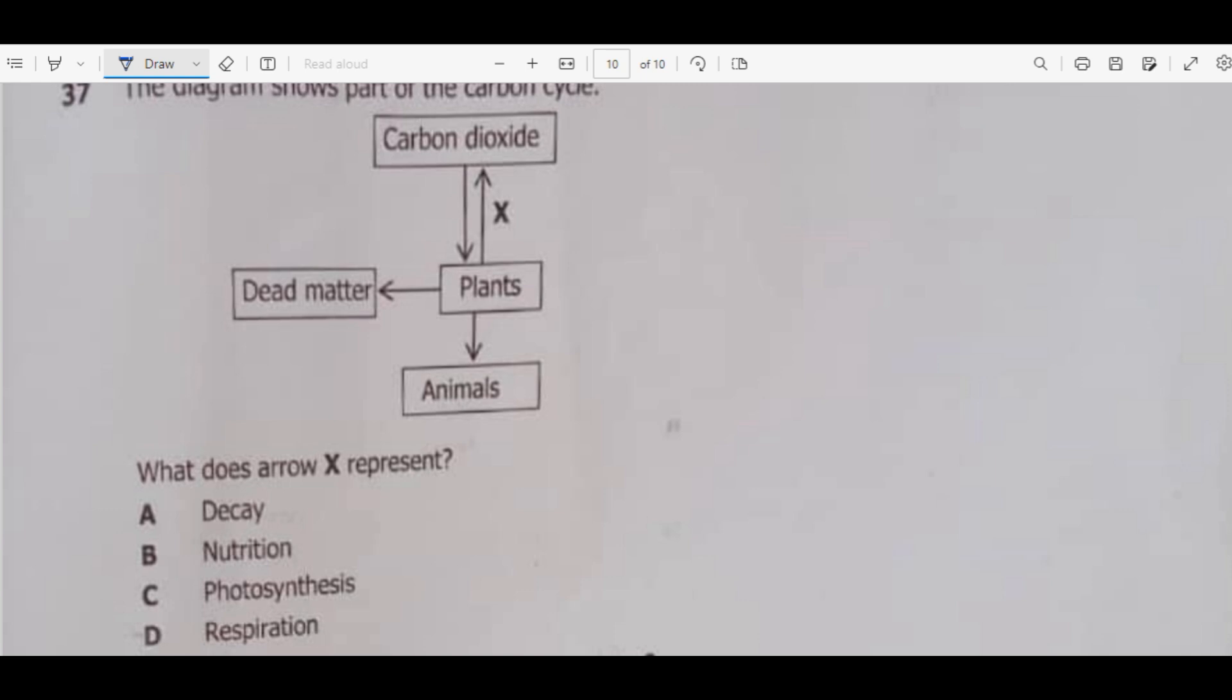Then question 37. The diagram shows part of the carbon cycle. What does arrow X represent? Arrow X represents the return of carbon dioxide into the atmosphere. Decay, which is decomposition. If you just look at decay, decay is where something decomposes. Whenever a substance decomposes, carbon dioxide is returned in the atmosphere. Then respiration also can help. So for this one I think we have A and D. These are two answers, because if you respire, like if you look at animals, we know that during respiration carbon dioxide is given out, which is the return of carbon dioxide into the atmosphere.